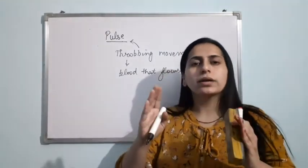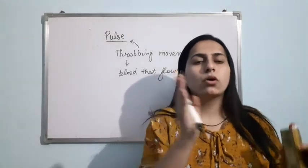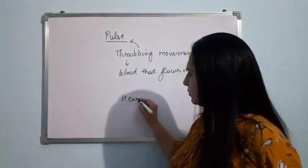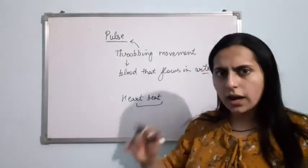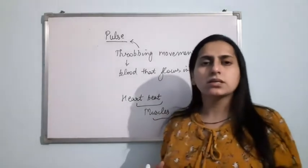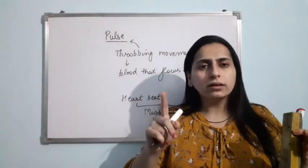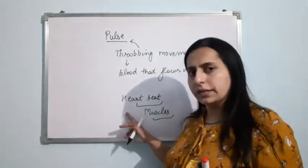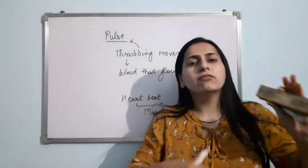Your heart is showing contraction and relaxation. This one contraction and relaxation makes a heartbeat. You know that your heart is made up of muscles, and with the help of those muscles your heart contracts and relaxes. One contraction and relaxation constitutes a heartbeat, and due to one heartbeat we have one pulse.